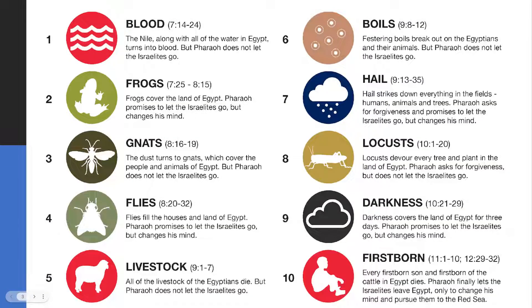Before we go to the questions, a quick recap of all 10 plagues the Lord allowed on the land of Egypt. The first was the plague of blood. The second was the plague of frogs. Then came gnats. Then flies. Then the death of the Egyptian livestock. The sixth was the plague of boils. Then came hail — hailstones raining down on everything the Egyptians owned. Then came locusts. After that was the plague of darkness. And finally, the plague of the firstborn of every Egyptian household and their cattle.